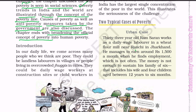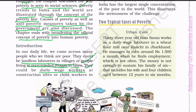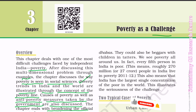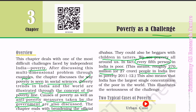In our daily life, we come across many people who we think are poor. They could be landless laborers in villages or people living in overcrowded slums in cities. They could be daily wage workers at construction sites or child workers in dhabas. They could also be beggars with children in tatters. We see poverty all around us. In fact, every fifth person in India is poor. This means roughly 270 million people in India live in poverty as per 2011 census. This also means that India has the largest single concentration of the poor in the world.